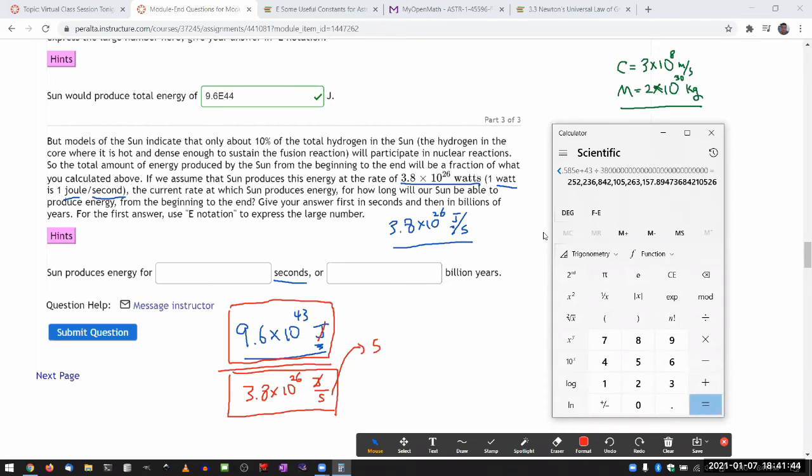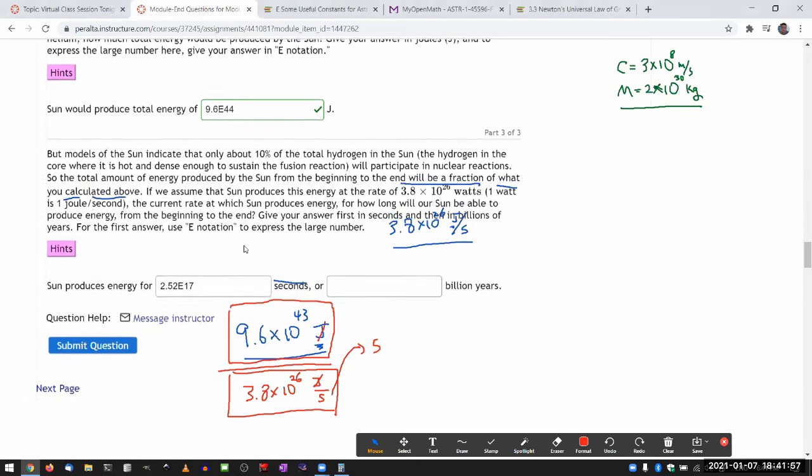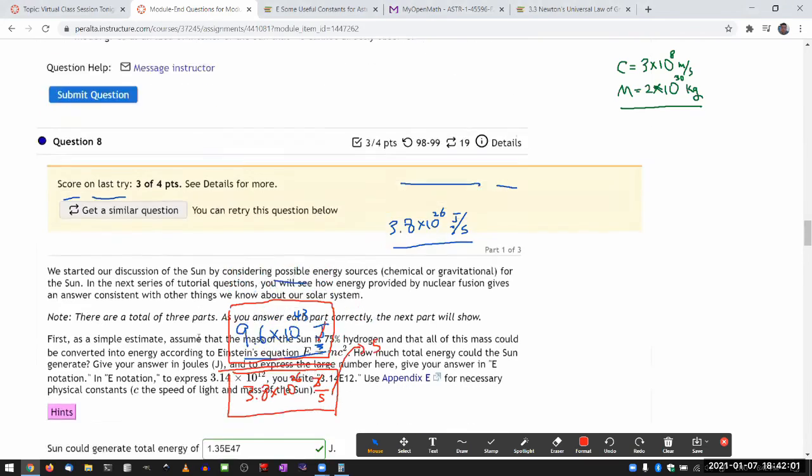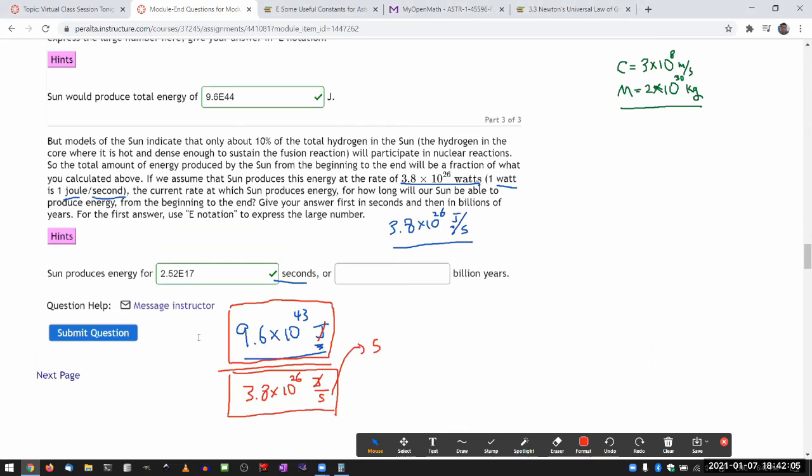So let me divide it by the power. So divided by 3.8 times 10 to the power of 26 joules per second. So that's a huge number of seconds. I mean, okay, it's 2.52 times 10 to the power of 17 seconds, 2.52 times 10 to the power of 17 seconds. I have no intuitive for how large number of seconds that is, other than that's the number I'm getting. Okay, so that's at least right.